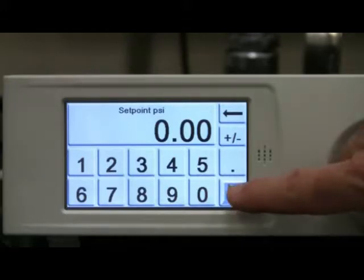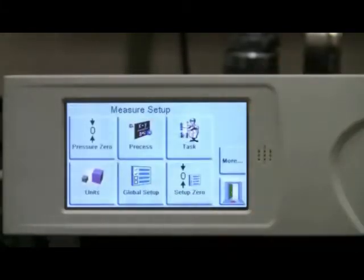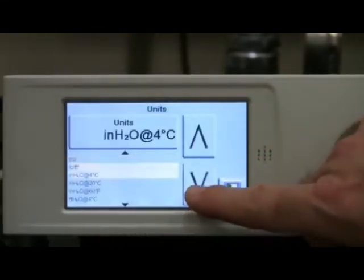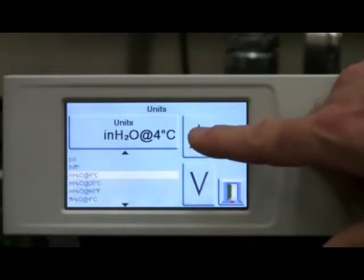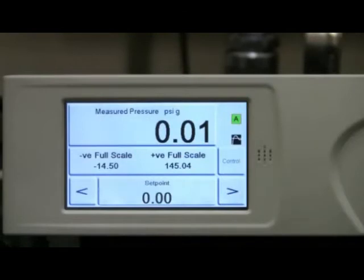Let's return to the main screen and perform a typical calibration run. Since the DPI-104 is presently displaying units in PSI, we will select PSI on the PACE 5000. PACE 5000 includes 24 different pressure units to choose from. If the required unit is not included, there are four user-defined units that can be created.